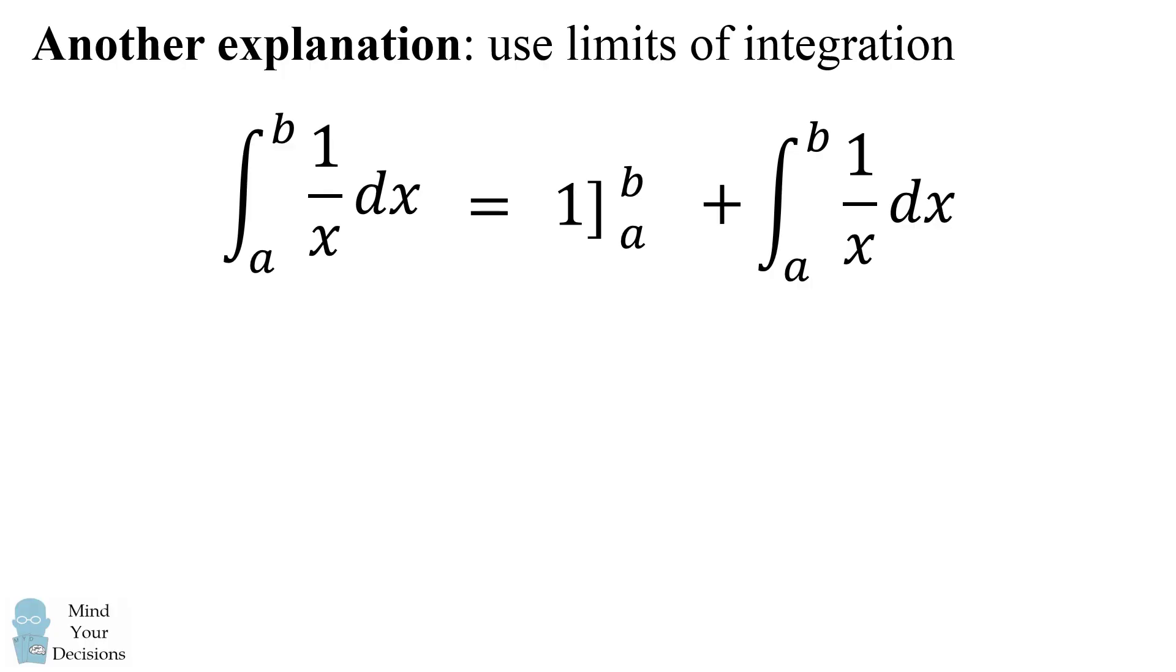Now what happens when we evaluate the function 1 from a to b? Well, this will be equal to 1 at both points, and we're going to subtract that, so we get 1 minus 1. And of course, 1 minus 1 is equal to 0.